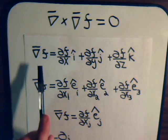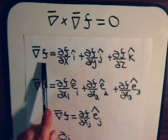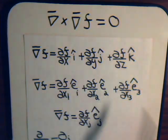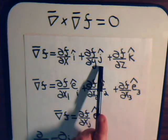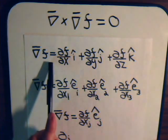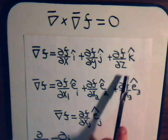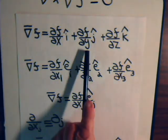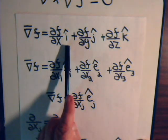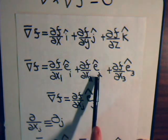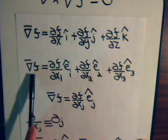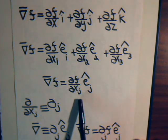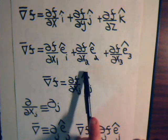Let's reveal the del operator. If we have it operating on a scalar f, it produces a vector by taking partial derivatives with respect to x, y, and z, then multiplying the partial derivatives by a unit vector. This vector made from this partial differentiation process is called the gradient vector. We could also express it where y is x2, z is x3, and we have a repeated index so we sum over that for 1, 2, and 3.